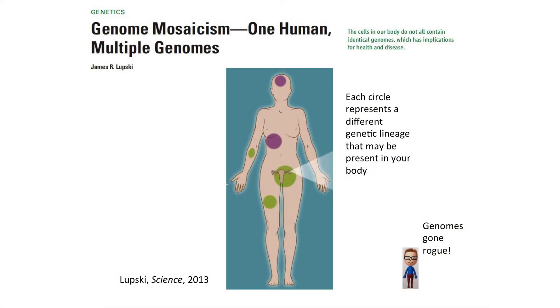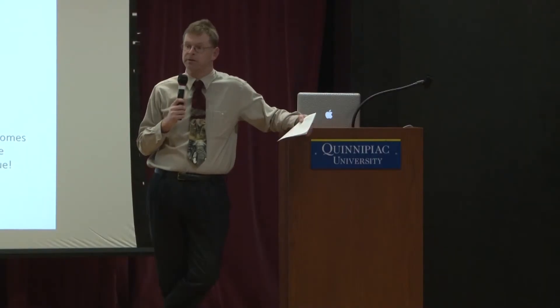Here's where the problem comes in. Last year, there was a paper published that many humans, many more humans than were thought, are what we call genetic mosaics. And what this means is that not all of our cells have the same genome. In fact, there may be many, many different genomes making up our cells.